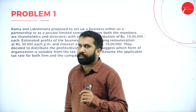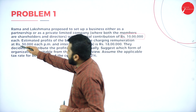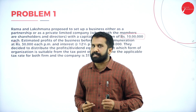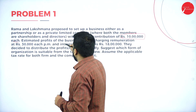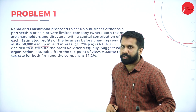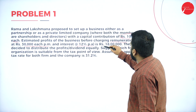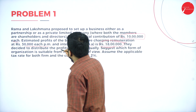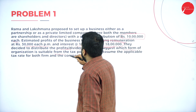Capital contribution is 10 lakh each — whether partnership or company. Estimated profit is 10 lakh each: first person 10 lakh, second person 10 lakh. Estimated profit of the business before charging remuneration is 30,000 each per month. Interest at 12% per annum comes to 18 lakh total.